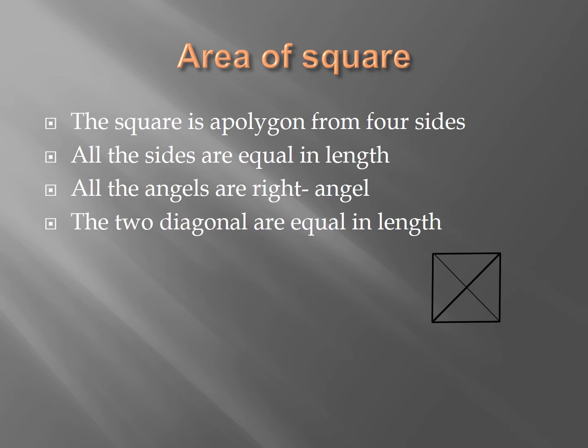You remember the information about the square? The square is a polygon with 4 sides. All the sides are equal in length. All the angles are right angles. And the two diagonals are equal in length.